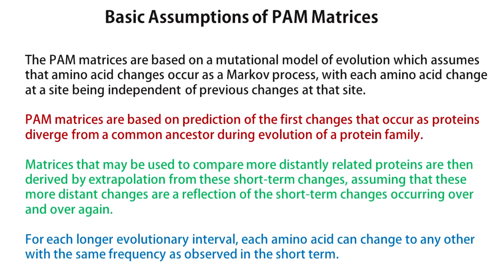These are the basic assumptions of PAM matrices. The PAM matrices are based on a mutational model of evolution which assumes that amino acid changes occur as a Markov process, with each amino acid change at a site being independent of the previous changes at a site. PAM matrices are based on predictions of the first change that occur as proteins diverge from a common ancestor during evolution of a protein family.